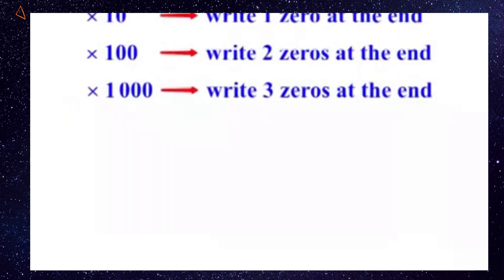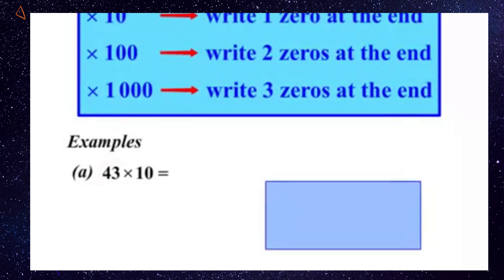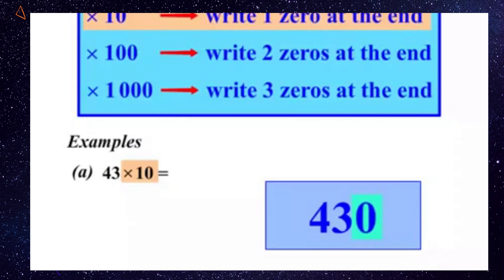Let's see how that all works. Let's look at some examples. Part A: 43 times 10. Well, let's start with the 43. Now we're timesing by 10. Looking at our rule, if we times by 10, we simply write one zero at the end. So our answer there is 430. Easy. Very easy.